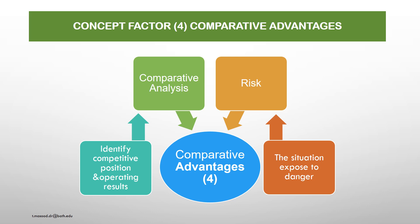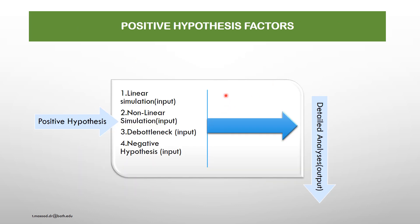Positive Hypothesis Factors. During a positive hypothesis, I have four elements: linear simulations, non-linear, debottleneck, and negative hypothesis. When blended, the output will provide a detailed analysis of how the positive hypothesis can be constituted. In my next slide, I will discuss linear simulation, non-linear, debottleneck, and negative — individually — and then we will reach the detailed analysis of the positive hypothesis factors.